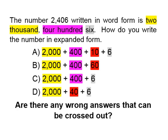Let's look at answer choice A. Do we have two thousand? Yes, we have that highlighted in yellow. Four hundred? Yes, we do. But we have ten, and there's not a ten in our number, so we're going to highlight ten in red because in our written form we do not have a ten in the number. We have a six, yes, so we'll highlight that in gray.